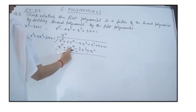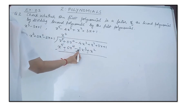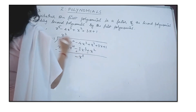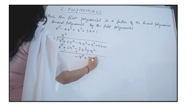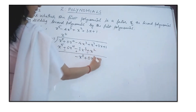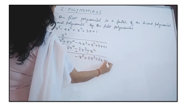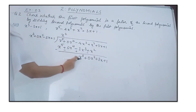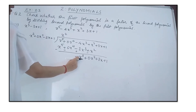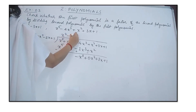The x⁵ terms cancel. There is no x⁴ term to bring down. For the x³ terms: −4x³ + 3x³ gives −x³. The x² terms cancel. We bring down x² + 3x + 1 since we need four terms. The new dividend terms are −x³ + x² + 3x + 1.